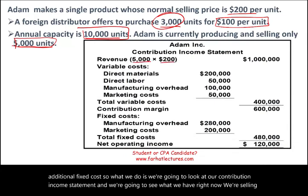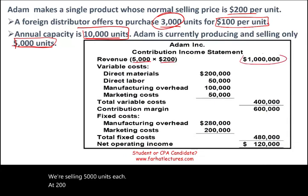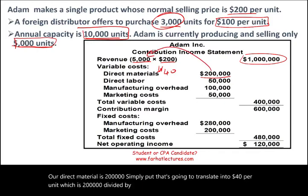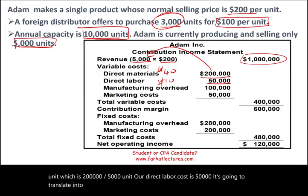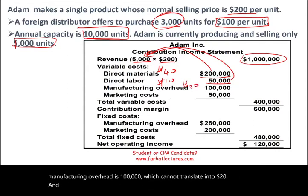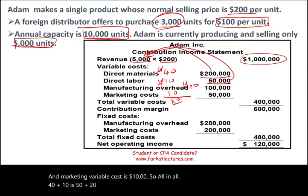Right now we're selling 5,000 units each at $200, so total sales is $1,000,000. Direct material is $200,000 — that's $40 per unit ($200,000 divided by 5,000 units). Direct labor cost is $50,000, translating to $10 per unit. Manufacturing overhead is $100,000, which is $20 per unit. Marketing variable cost is $10 per unit. So total variable cost is $40 + $10 + $20 + $10 = $80 per unit.